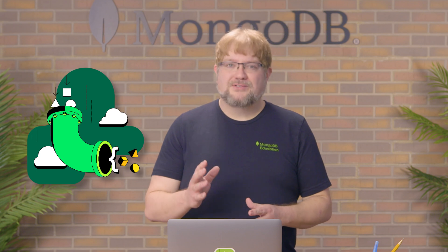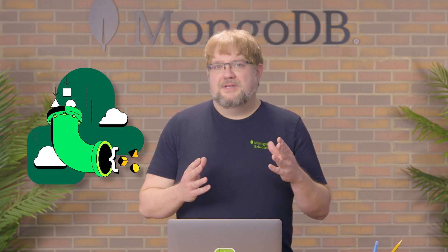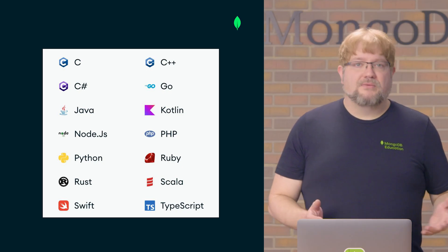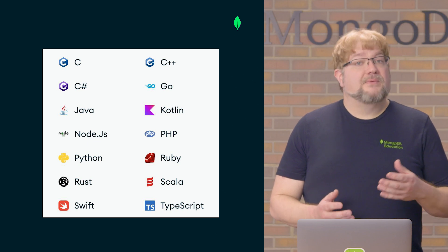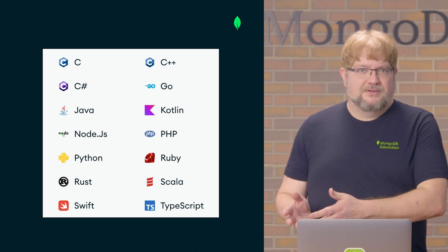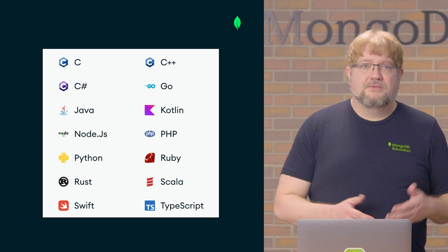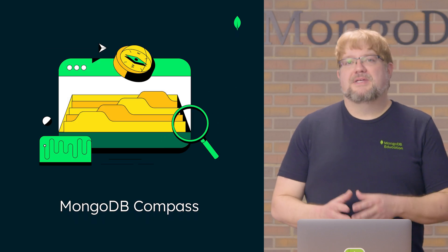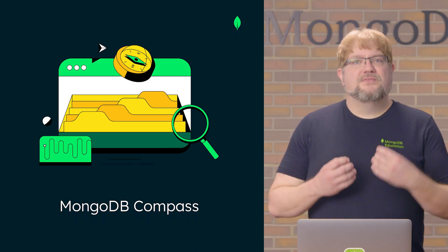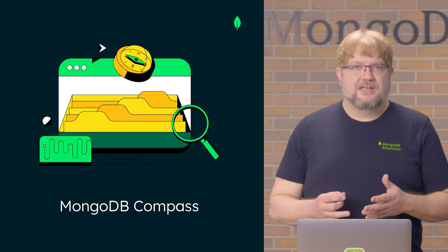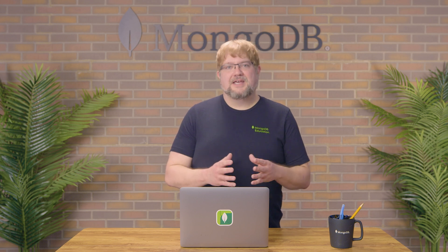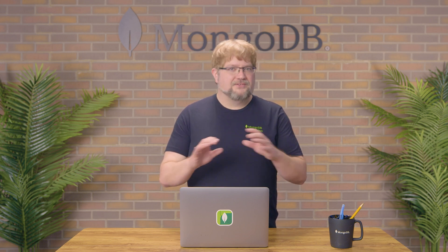Now you know a little bit more about how MongoDB's aggregation framework processes data. But how do we actually build an aggregation pipeline? MongoDB gives us a number of options. We could build an aggregation pipeline programmatically using syntax from a MongoDB driver and include it in our application code. Or we can build, run, and export pipelines using MongoDB Compass. Compass helps us visualize documents as they're processed by each stage, which can be very useful. Any of these tools make it easy to get started using the aggregation framework to process and transform data.